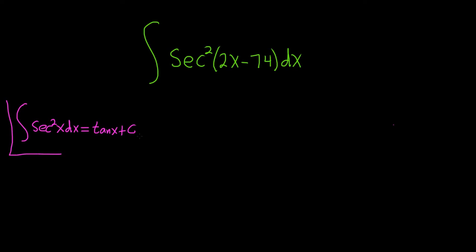Because the derivative of tangent is secant squared. So this is one of the simple ones that we tend to forget when we're doing harder problems. The only thing here is that it's not just secant squared. It's secant squared of 2x minus 74.